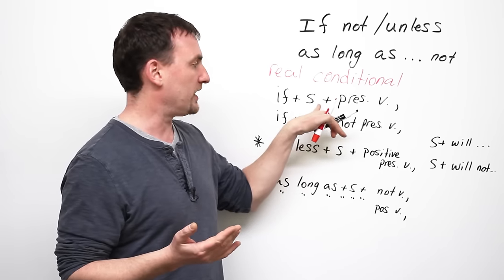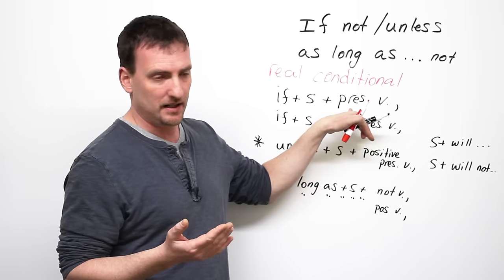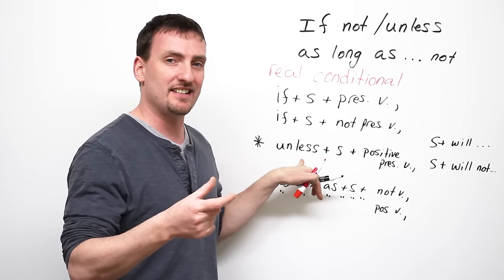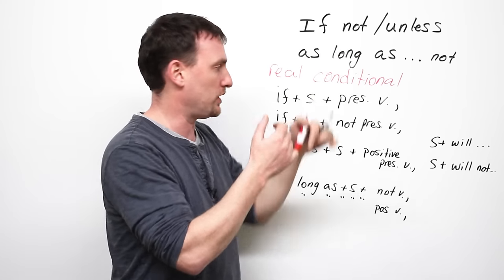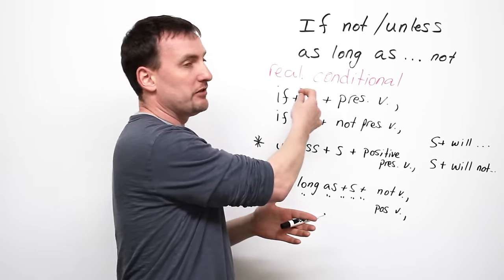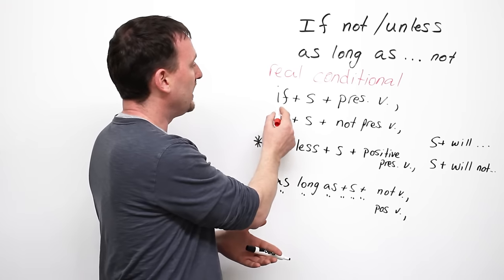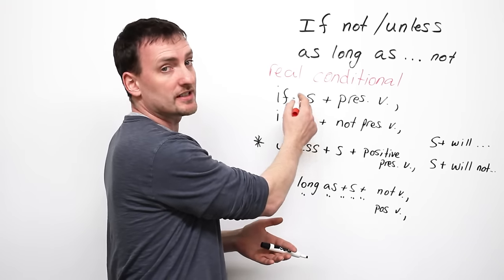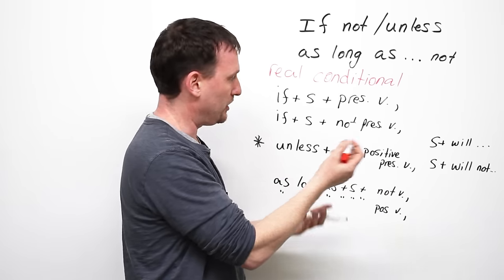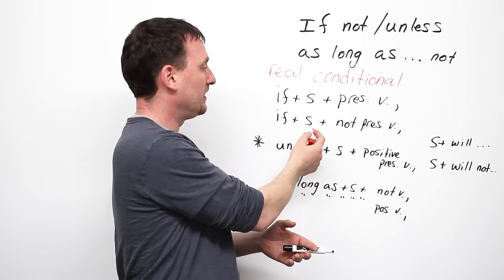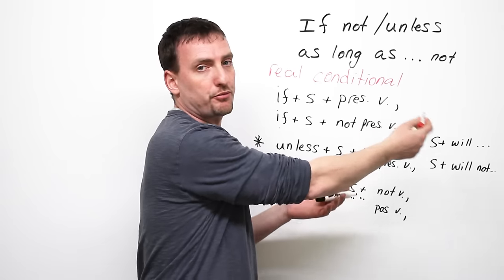So first, we're going to look at how to structure this sentence. Because then I want to show you that unless basically means the same as if not. Okay? So first, to make a real conditional sentence, you have your if, you have your subject, you have your present verb. Or you have if, subject, and not present.